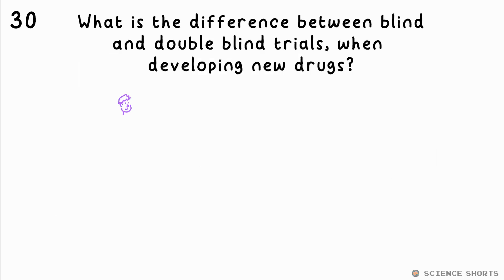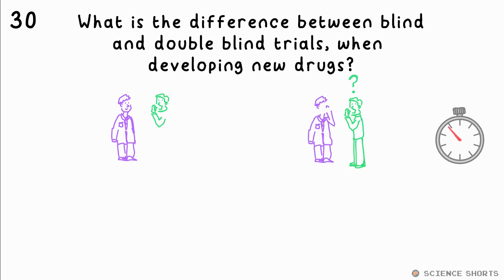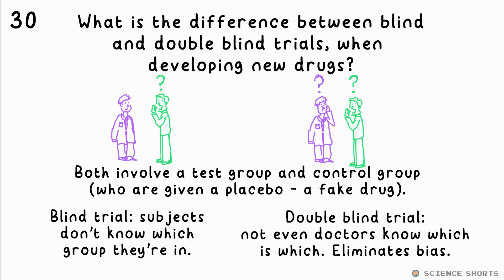What is the difference between blind and double blind trials when developing drugs? A blind trial involves a test group given the drug and a control group given a placebo — the test subjects don't know which group they're in, but the scientists or doctors do. For a double blind trial, not even the doctors know which is which, eliminating any bias.